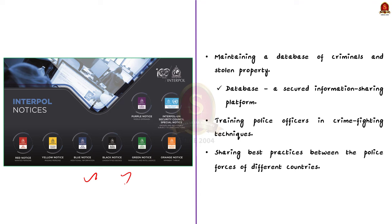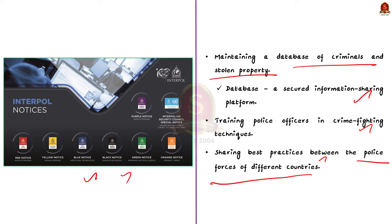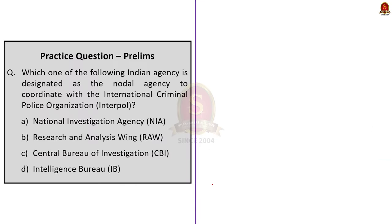Secondly, Interpol maintains a database of criminals and stolen property. This database acts as a secure information-sharing platform for member countries, helping police forces across the globe carry out efficient criminal investigations. Finally, Interpol trains police officers in crime-fighting techniques and is involved in sharing best practices between the police forces of different countries. In this discussion, we saw the basics of Interpol, its organizational structure, and its major functions.